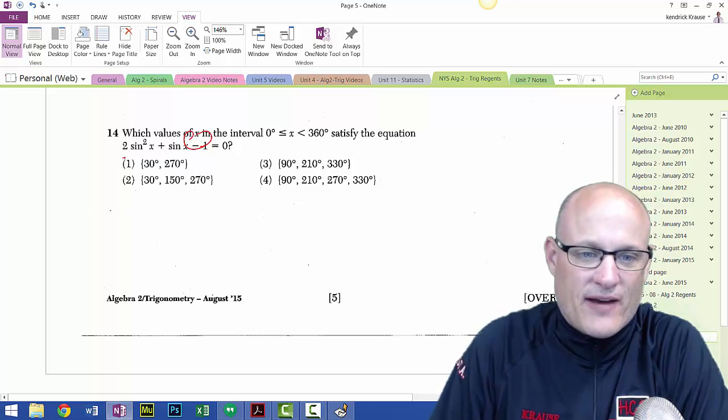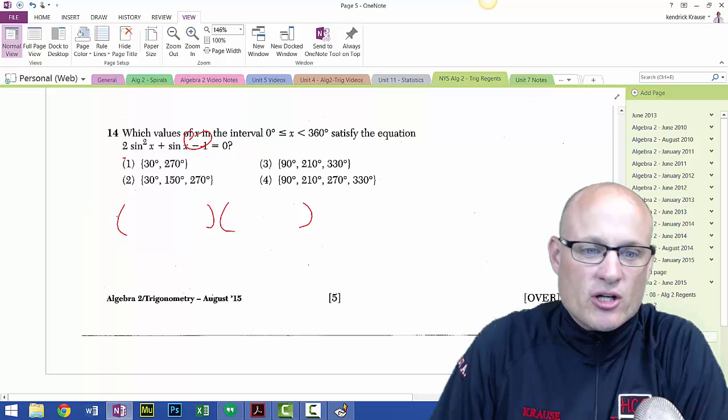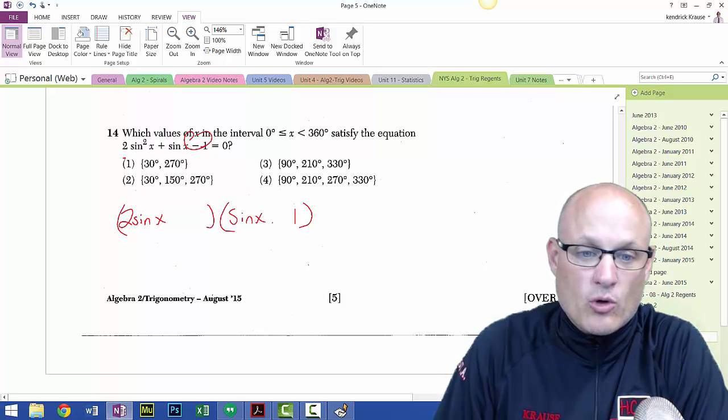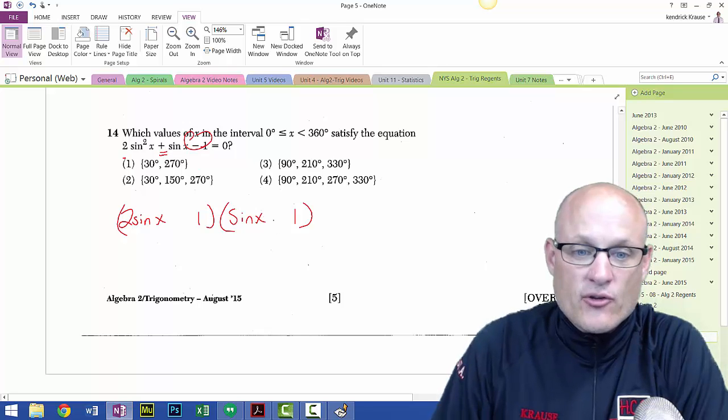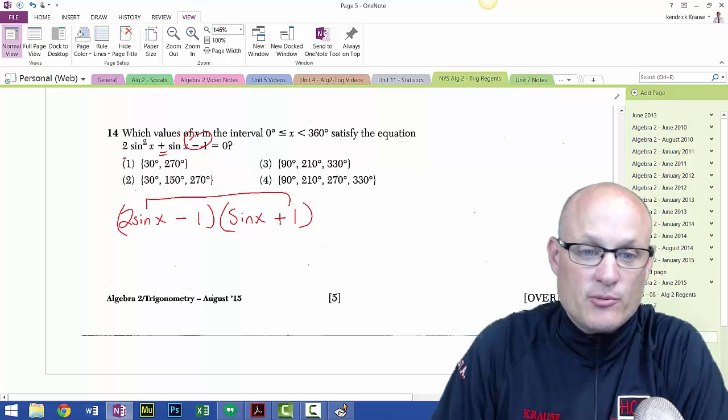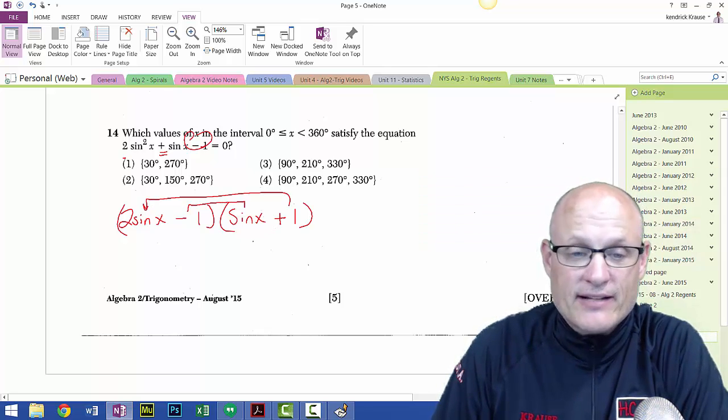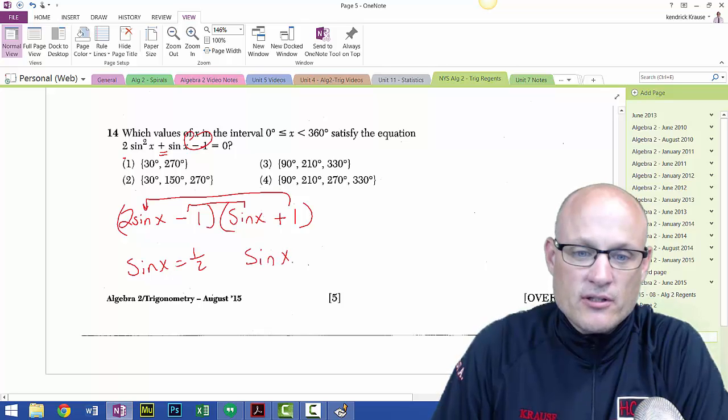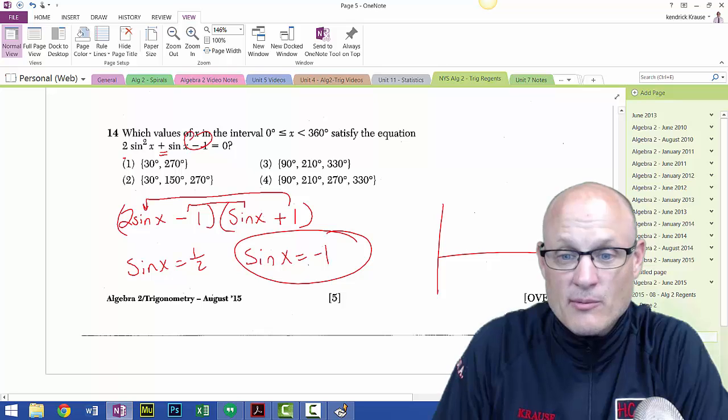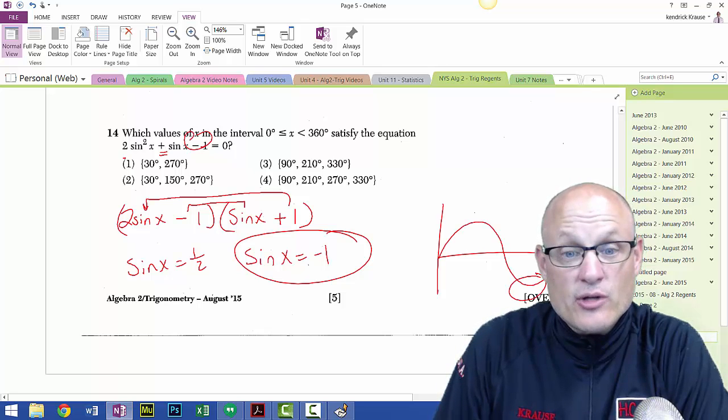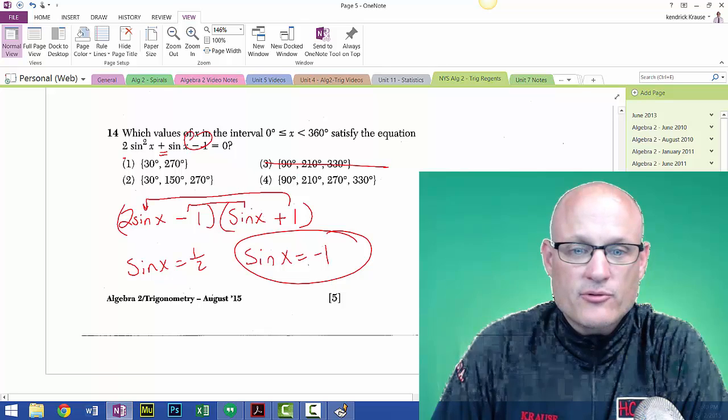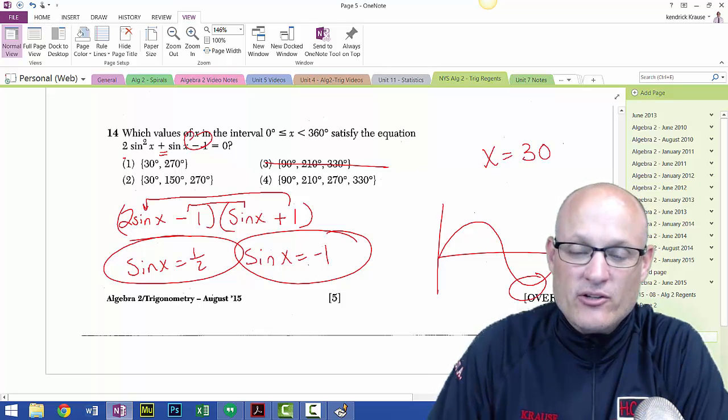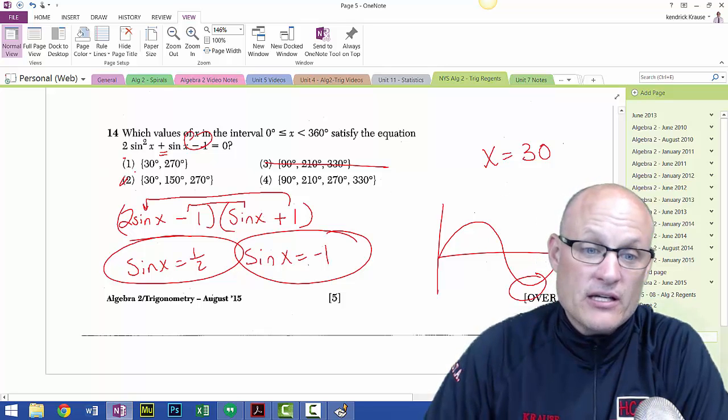This one you could have worked backwards on or you could have just simply factored. It's really easy factoring. You're going to put two sine theta or x and sine x. There's only one way to multiply to one: negative one. So we're going to put a one and a one and they got to add up to positive one. So this one has to be positive and this one has to be negative. That's positive two sine x and that's negative one sine x, and that adds up to positive one sine x. So you end up with sine x equals a half and sine x equals negative one. Draw your picture: sine x equals negative one at 270 degrees. If it doesn't have 270 in it, it can't be an answer. All three of them have 270. And then we got to deal with this half. Sine x equals a half when x equals 30 degrees, but we also have to get the angle in the second quadrant, which would be 150. The answer is two.